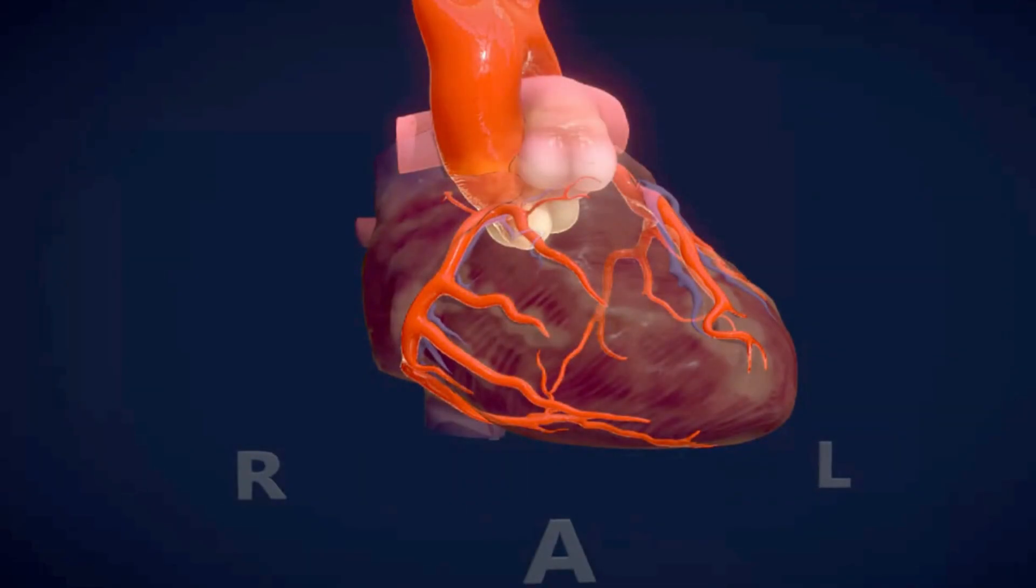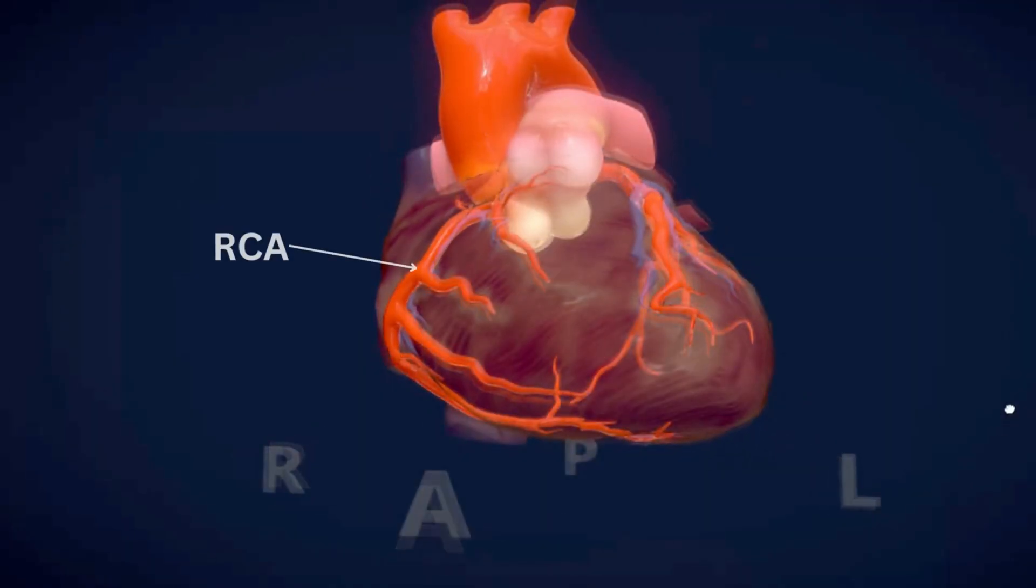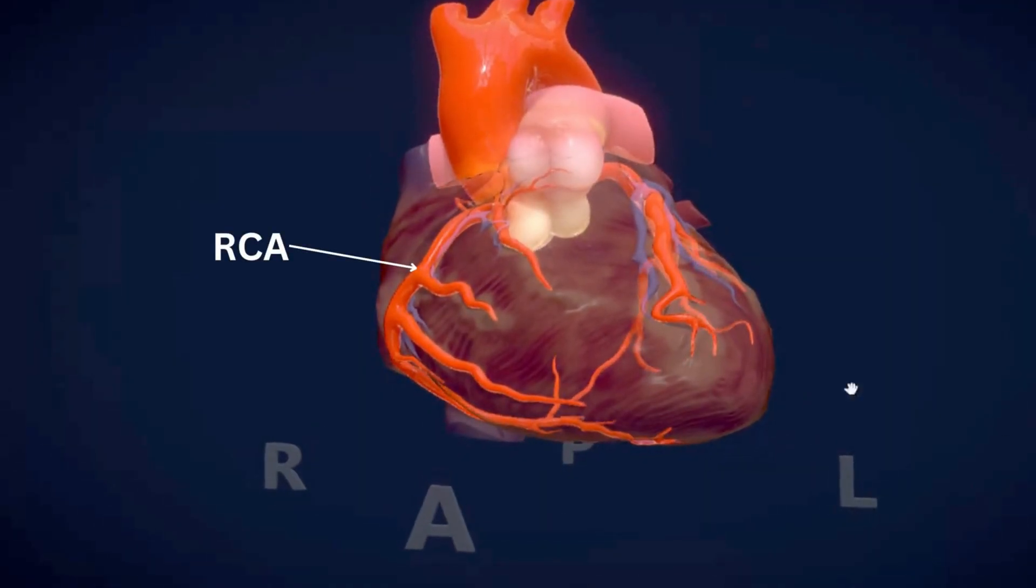Okay let's start with the basics. The heart has two major coronary arteries. The first one is the right coronary artery or RCA and the second one is left coronary artery or the LCA.